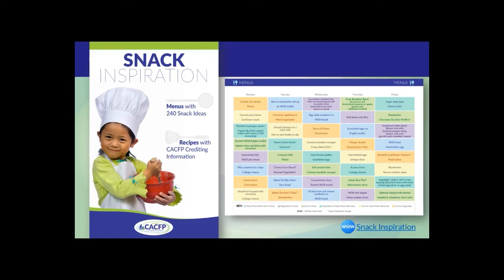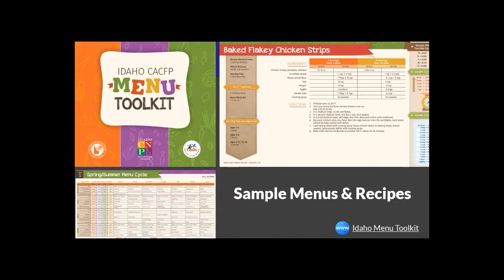The DPI recently printed the Snack Inspiration resource and will be mailing each program a copy in the future. Another resource that includes menus and recipes is a toolkit from Idaho. The toolkit includes three-week cycle menus for spring, summer, and three weeks for fall and winter, with meal ideas for breakfast, lunch, snack, and supper. Menus identify whole grain rich foods and dark green, red, and orange vegetables and legumes. There are over 60 recipes that include CACFP crediting information and serving sizes per age group.